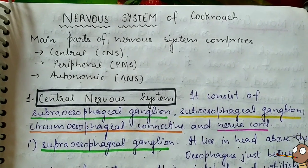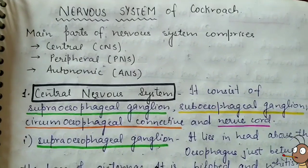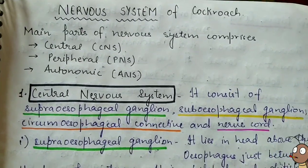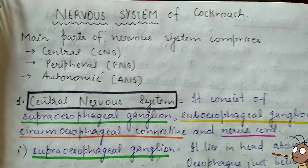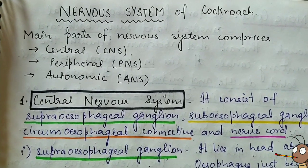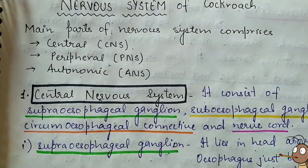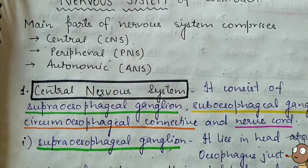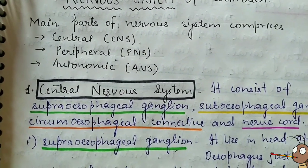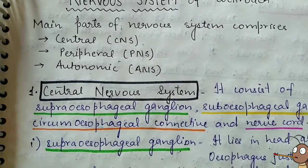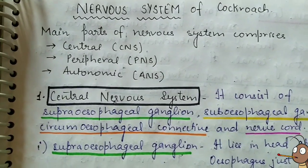Hey friends, in this video we are going to study about the nervous system of cockroach. The nervous system is basically divided into 3 different parts. To study the nervous system of a cockroach, the first system we study is the central nervous system, secondly we study the peripheral nervous system, and last comes the autonomic nervous system. These three together make up the whole nervous system of cockroach.